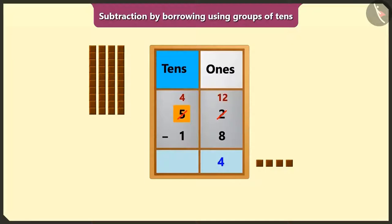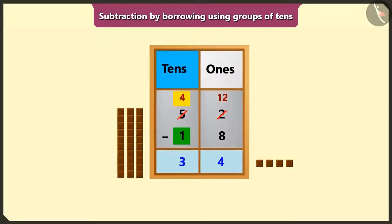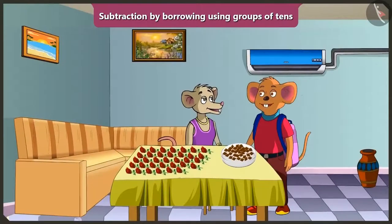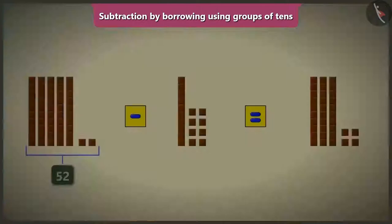Now we have to subtract the numbers of the tens place. If we subtract 1 ten from 4 tens, we will get 3 tens. So we will write 3 in the place of tens. This way, after eating 18 chocolates from 52 chocolates, we would have 34 chocolates left.